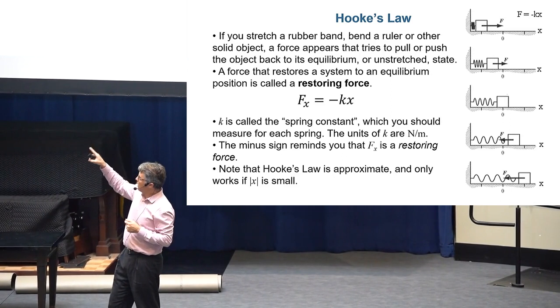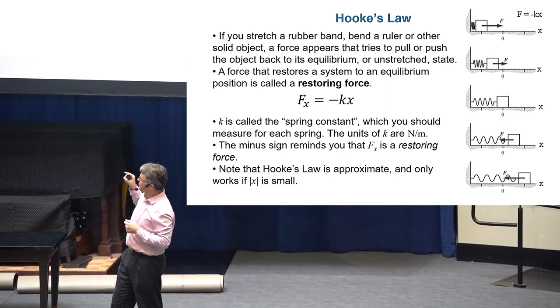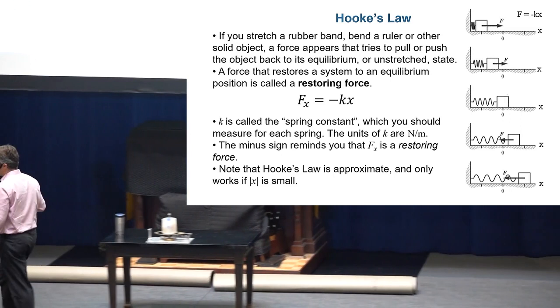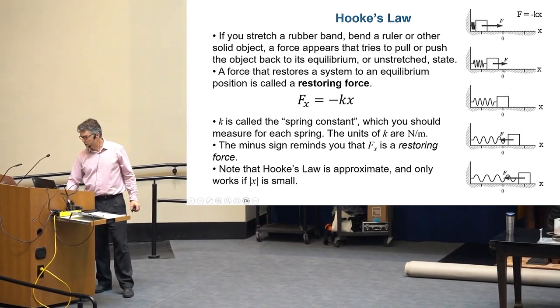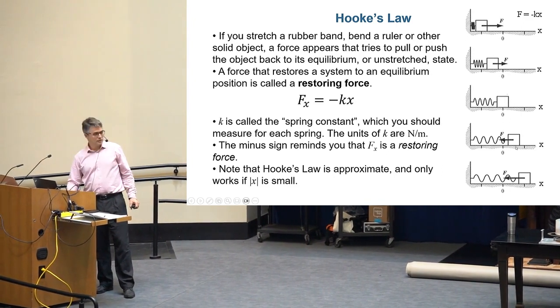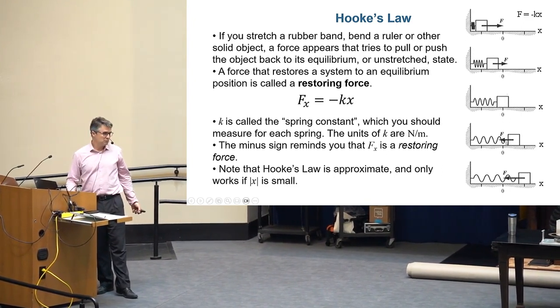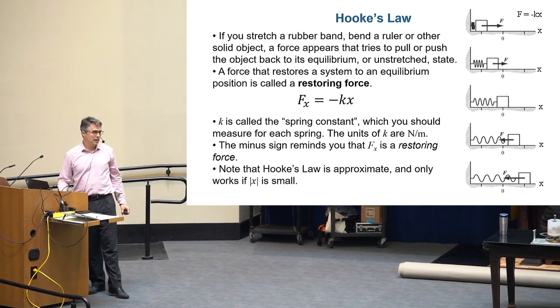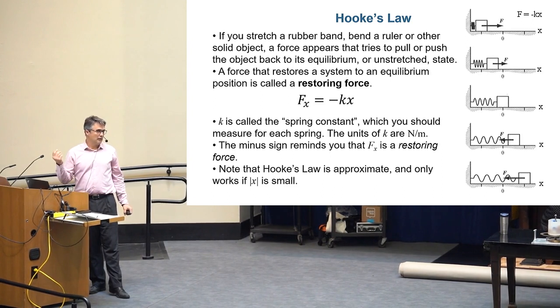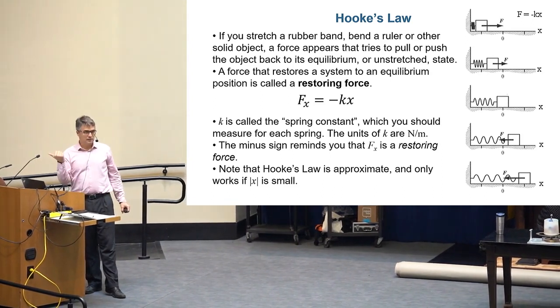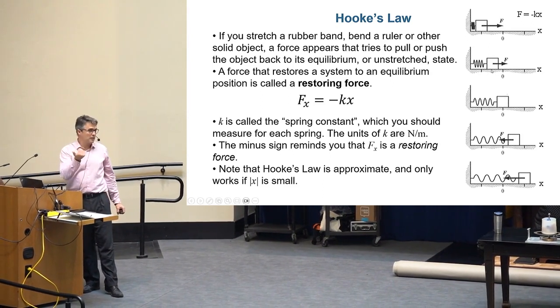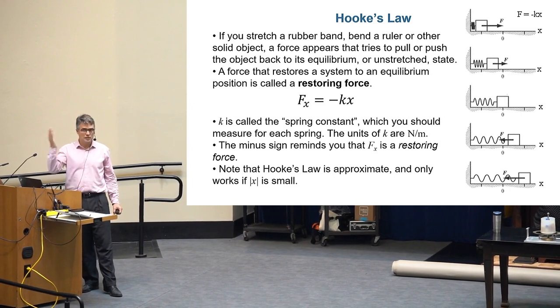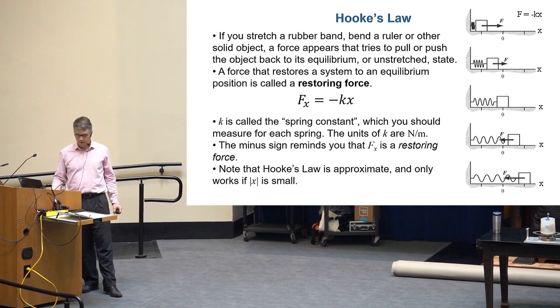But I guess if you look at it on the diagram there, if you set x equals zero to be like the unstretched position, then if you pull it to a positive x, then the force is negative. So that's why k is a positive number, and so they put that minus sign in there. If the displacement's positive, the force is negative. Also, if the displacement's negative, the force is positive, right? So it's an opposite direction force to the displacement at the end of the spring. That's what the minus sign does.